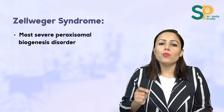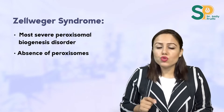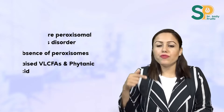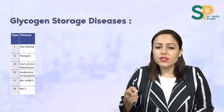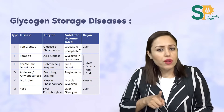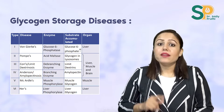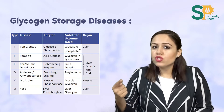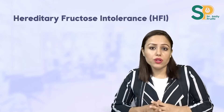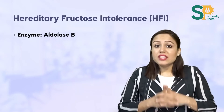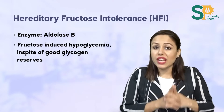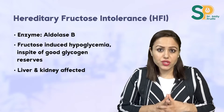Zellweger syndrome is frequently asked — it is the most severe peroxisomal biogenesis disorder, with absence of peroxisomes and increase in very long chain fatty acids and phytanic acid. Do all glycogen storage diseases: type 1 — most common in children — von Gierke's disease, deficiency of glucose-6-phosphatase; type 5 — most common in adults — McArdle's disease, deficiency of muscle phosphorylase. Also do hereditary fructose intolerance — deficiency of aldolase B — causing fructose-induced hypoglycemia; liver and kidneys are affected, with no cataract.